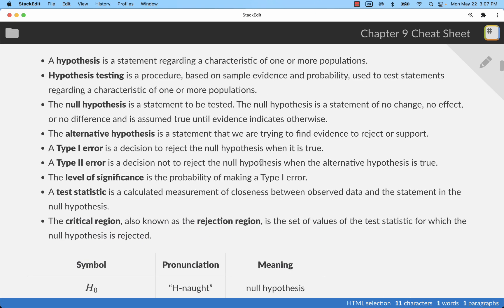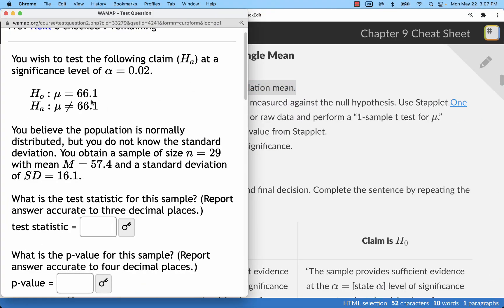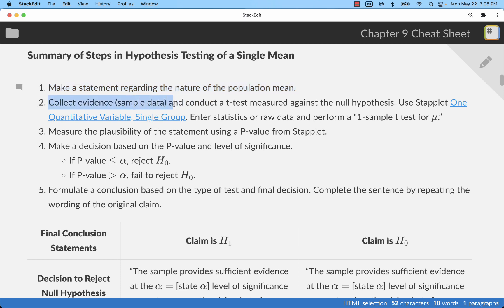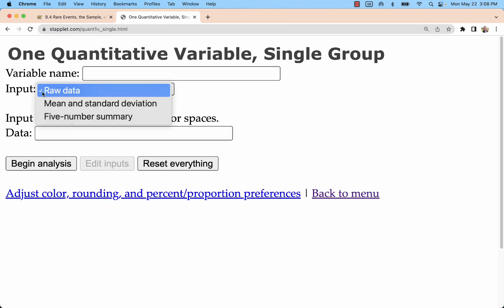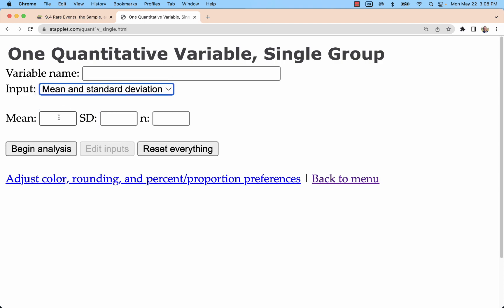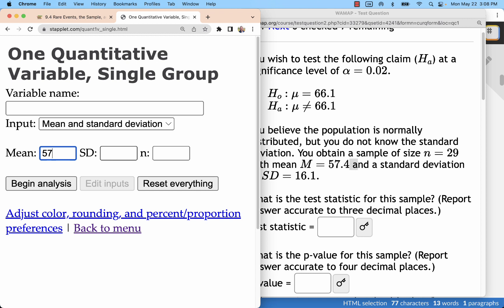To actually answer the problem, we're going through these five steps. We already have step one done. There is a statement that has been made about the nature of the population mean, specifically HA. The statement would be that the population mean is not 66.1. Next, we're going to have our sample data, which has already been collected, then conduct a t-test using staplet.com, one quantitative variable, single group. I have that over here. If we have a spreadsheet of measurements, we'll go with raw data, something like in the project or in more real-life situations. But for most problems, we will already have summarized data, meaning someone already found the mean and standard deviation. For this problem, we'll be looking down below with a mean of 57.4 and a standard deviation of 16.1 with a sample size N of 29.